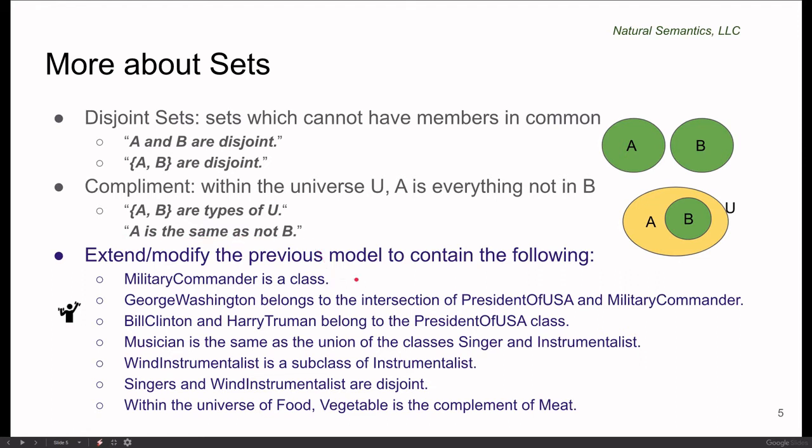So let's do an exercise. Starting with your previous model, please do the following: Add military commander as a class. Modify the definition of George Washington to say that he belongs to the intersection of presidents of USA and military commander.